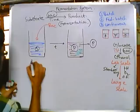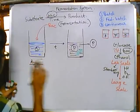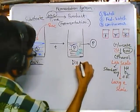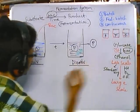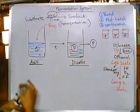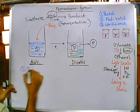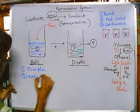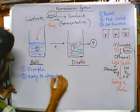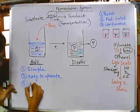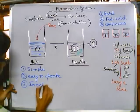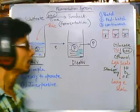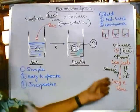The advantages of batch fermentation are: it is very simple, it is easy to operate, and it is inexpensive. Because it is less expensive, developing countries like India rely on batch fermenters for production processes.